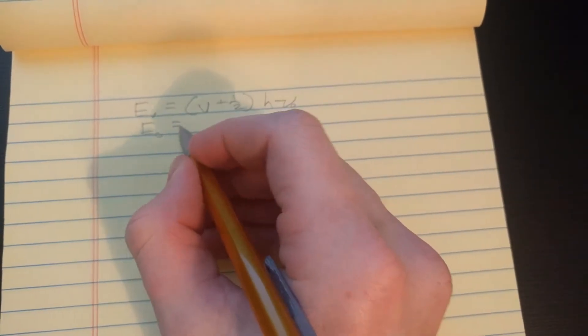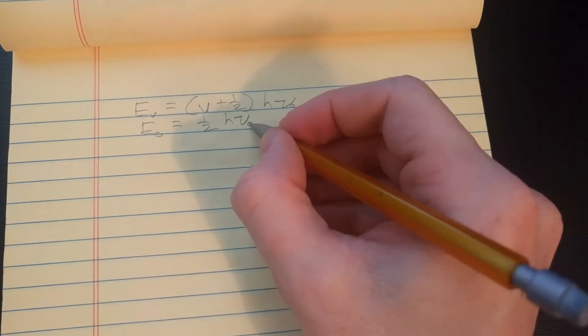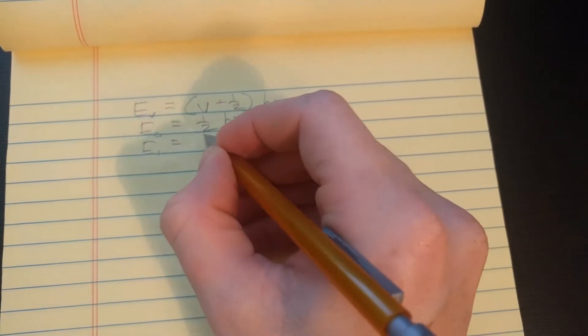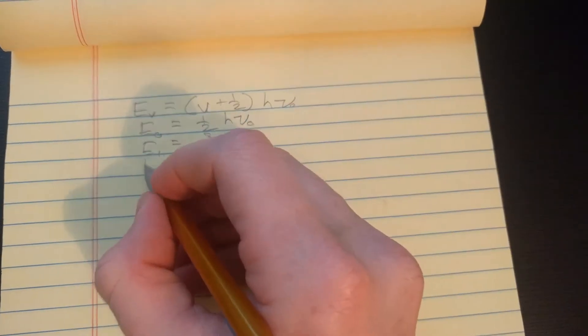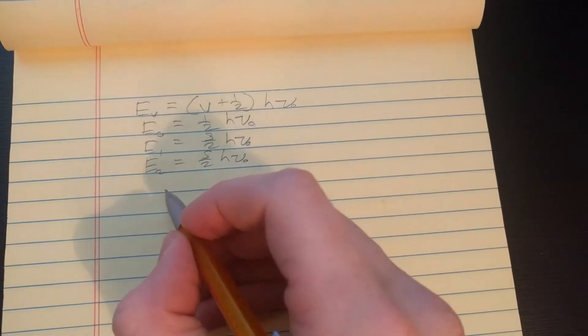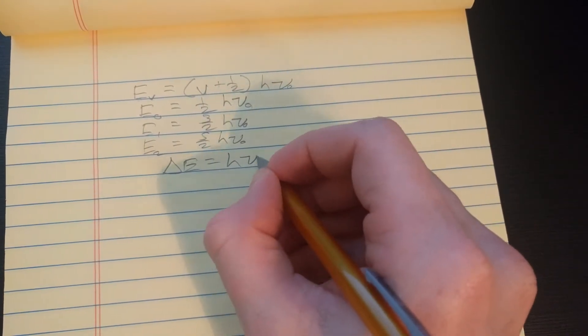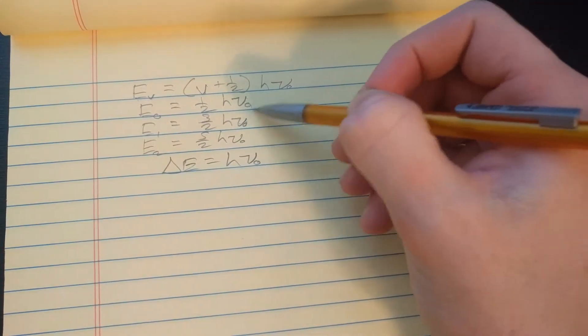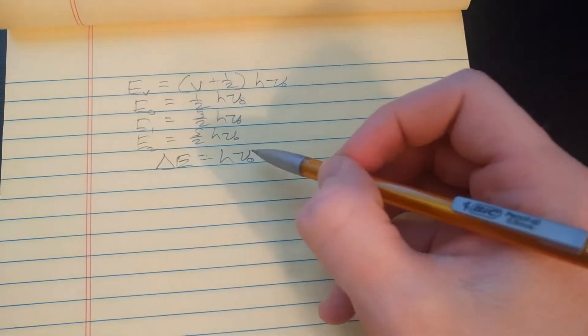So, let's take the energy, and v can be zero. So, the lowest energy is when v is zero. So, we get half times h nu naught. E1 would be 3 over 2 h nu naught. E2, 5 over 2 h nu naught. So on and so forth. And you can see the difference between these different energies is just h nu naught. It's the same between each consecutive energy level. It's always h nu naught.